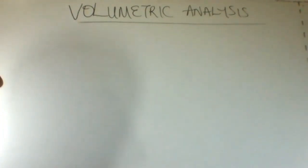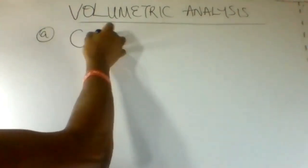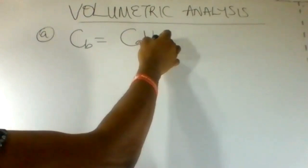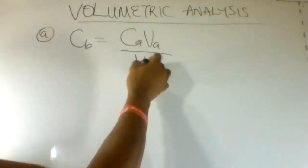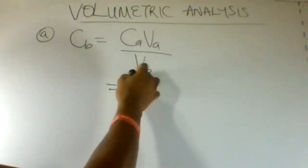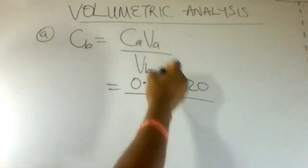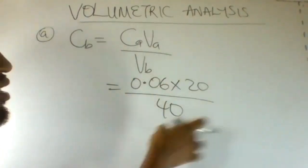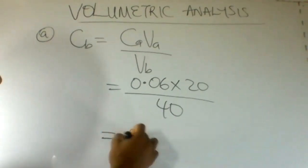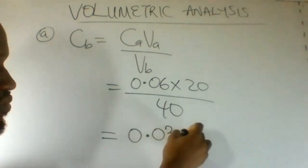Therefore, concentration of the base, our first part of the question. Concentration of the base equals concentration of the acid multiplied by volume of acid divided by volume of the base. Concentration of the acid is 0.06, volume of acid is 20, volume of base is 40. Concentration of the base in moles per dm³ equals 0.03 moles per dm³.